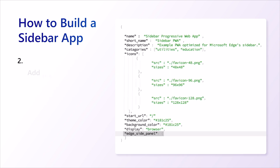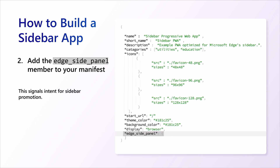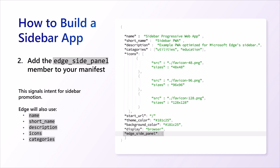Next, add the Edge side panel member to your manifest. This signals that your web app is compatible with the sidebar and can be promoted within it. Edge will use this and other members from your manifest, including name, short name, descriptions, icons, and categories, to create UI that allows users to easily discover and pin your sidebar app.